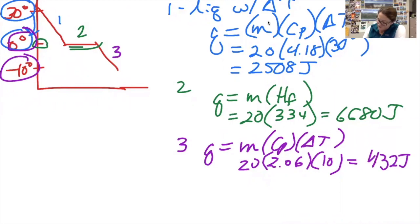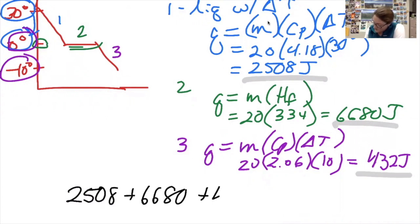To get my answer to this problem, I now need to add this number, this number, and this number together. So the total is 2508 plus 6680 plus 412.